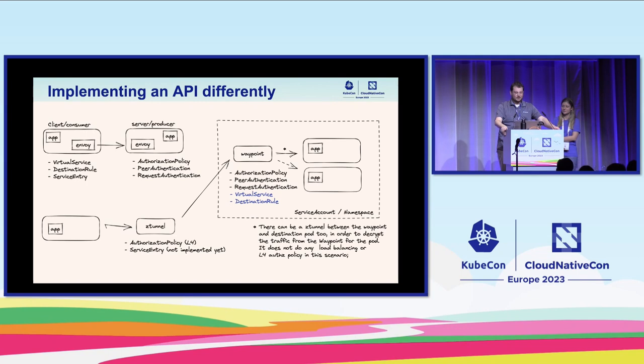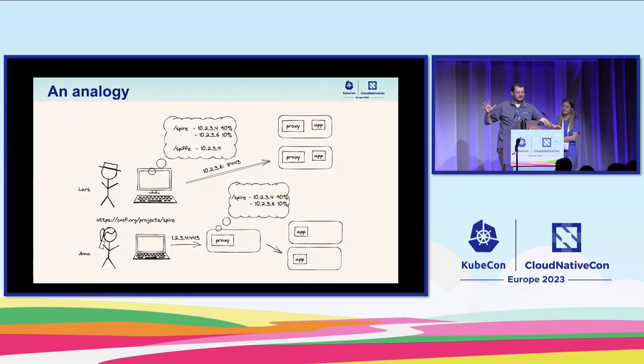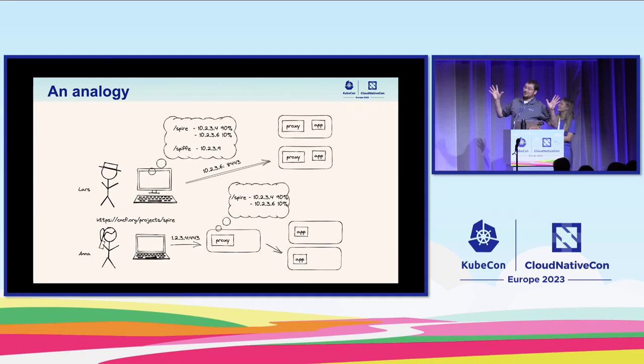Looking at the API implemented in the waypoint, we see AuthorizationPolicy, PeerAuthentication, and RequestAuthentication — everything previously on the server side — but now we also see VirtualService and DestinationRule on the server side. However, they are scoped differently. The waypoint in ambient is scoped to a service account or a namespace, so it's a given app's waypoint — it is their security umbrella, in their namespace, and they are the only ones that control policy for it.